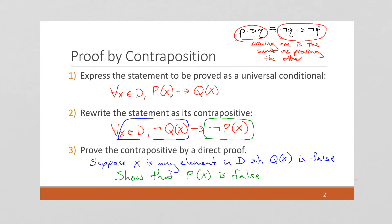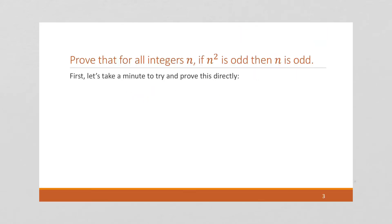So we're now going to apply this method to a proof. We want to prove that for all integers n, if n² is odd, then n is odd. To see the usefulness of a proof by contraposition, I'm going to first try to solve this directly. So to prove something directly, we need to put it in a universal conditional statement form. This is the statement: for all n in the integers, if n² is odd, then n is odd.